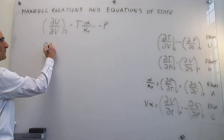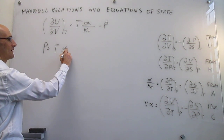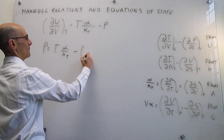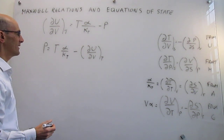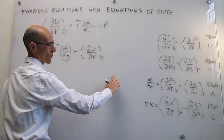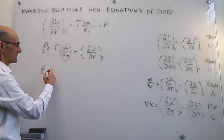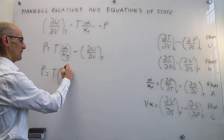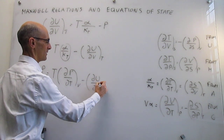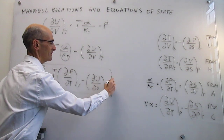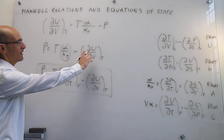This is going to allow us to write an expression for pressure for any substance, regardless of whether it's a gas, a liquid, or a solid. We simply solve for pressure: P = Tα/κ_T − (∂U/∂V)_T. We can take this further and note that the α/κ_T term appears in a Maxwell relation, giving an even more general expression: P = T(∂P/∂T)_V − (∂U/∂V)_T. This equation of state is entirely universal.